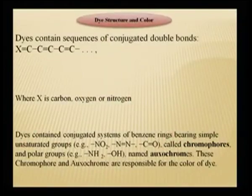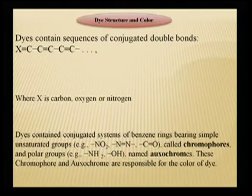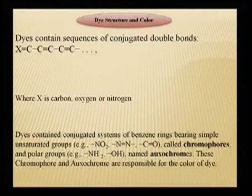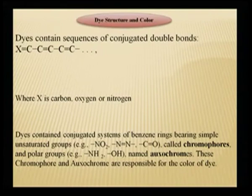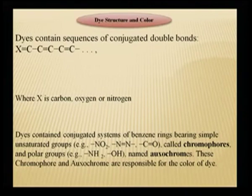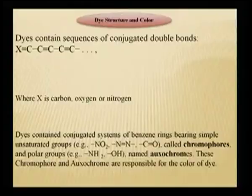The more the conjugation in a dye, the darker is the color. Dyes contain sequences of conjugated double bonds where X is carbon, oxygen or nitrogen. Dyes contain conjugated systems of benzene rings bearing groups like nitro groups, azo groups and carbonyl groups — these are called chromophores. We have already learned all this; this is just recapitulation so we can connect the concepts and understand in a much better manner.